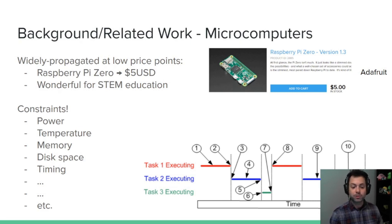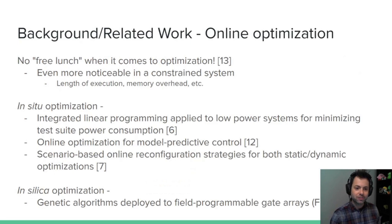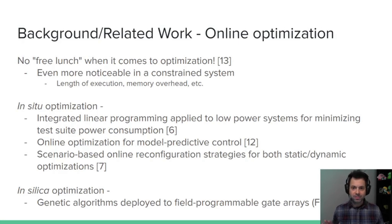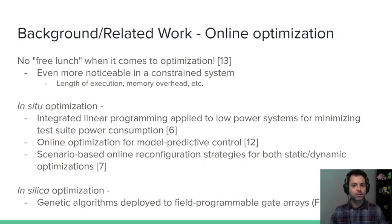At the microcomputing level, we also have timing constraints — effectively a real-time operating system where we have to ensure no collisions are occurring and no schedules are being delayed. Basically, all of your real-world problems are right at the forefront. This also connects to the notion of no free lunch: you're never going to have the perfect algorithm for free. On these microcomputers, the no-free-lunch paradigm is very noticeable because of the constraints around disk space, memory, overheating, and real-time considerations.